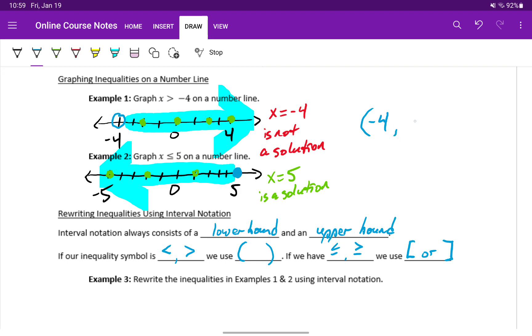And then our interval in this case will go to an upper bound of positive infinity, because we could plug in any number larger than negative four, and it would make this inequality statement true. Any time we have an infinity symbol in our interval notation, we're always going to use rounded parentheses.